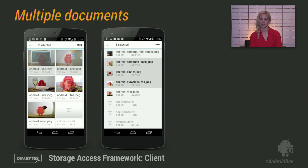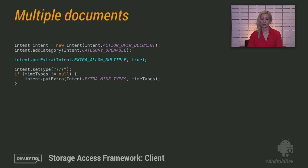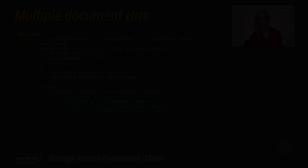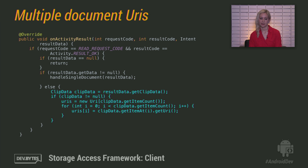So we could open one document before — what about lots of documents at the same time? All you have to do to let the user select multiples is add EXTRA_ALLOW_MULTIPLE to your intent. If you want, you can specify multiple MIME types. This time, we get back ClipData via intent.getClipData(), and you can get the URIs using ClipData.getItems() and then item.getUri(). Note that you still have to check intent.getData() the same as a single URI, because if the user picks just one document, it still comes back in intent.getData(). So you have to check both.